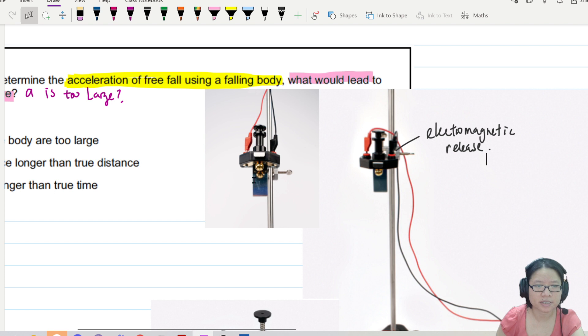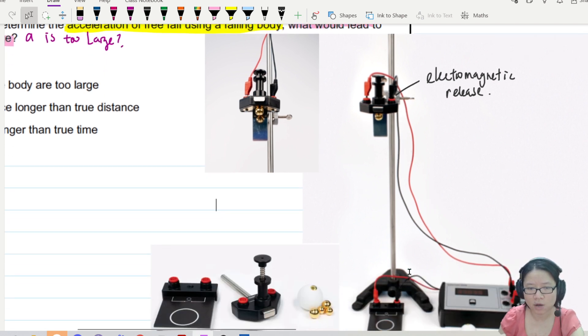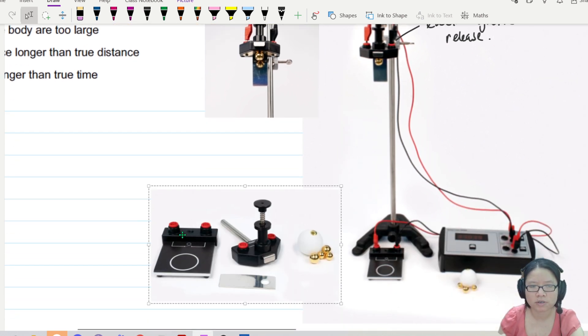This magnet is attached to the metal ball. And if I press this button to trigger it, the ball will fall down and land on the trapdoor. And this is the trapdoor. When the ball falls on the trapdoor, the trapdoor will send a signal into the timer. When the ball leaves the trigger, the electromagnetic release, it will also send a signal to the timer.